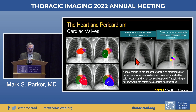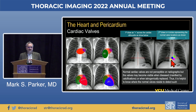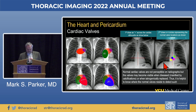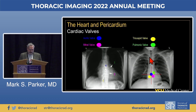Draw an X across your mediastinum and superimpose the four valves. Dead center on top of the spine is the aortic valve. Out toward the left hilum is the pulmonic valve. Overlying the left heart is the mitral valve. Overlying the right heart is the tricuspid valve. The mnemonic PAMT helps remember these, and the valves zigzag on and off the spine. In this patient, all four valves were replaced—tricuspid, mitral, aortic, and pulmonic.